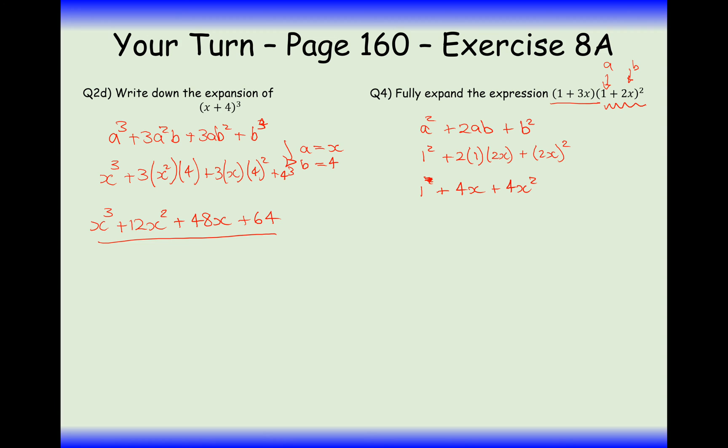And now we'll bring in the 1 plus 3x. There's nothing that we could have... There's no shortcut that we could have taken given that different power on the end there. Or the different bracket at the start here, rather. We just have to leave it alone and expand it manually. 1 plus 4x plus 4x squared. So that's 1 times out by everything. And now 3 times out by everything. I'm going to get plus 3x plus 12x squared plus 12x cubed. And now add these up and you're going to get 1 plus 7x plus 16x squared plus 12x cubed. There we are. So that's the final answer to question 4.